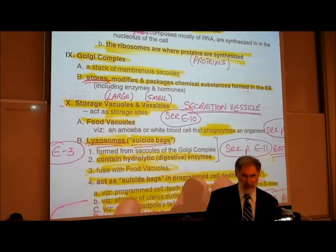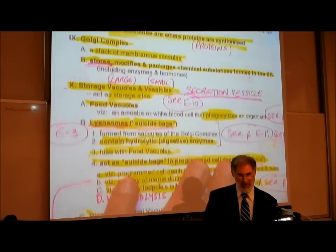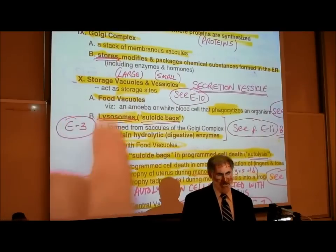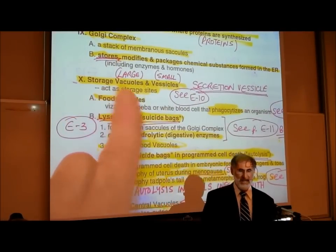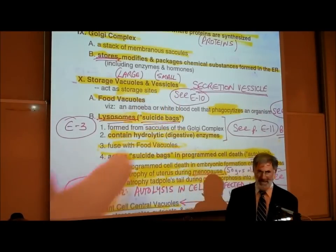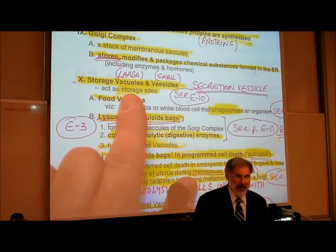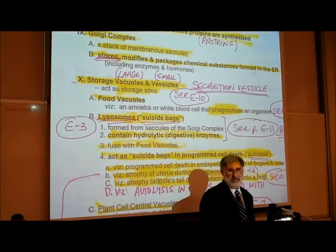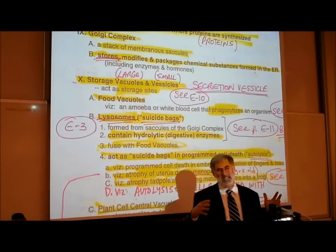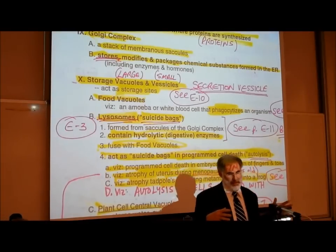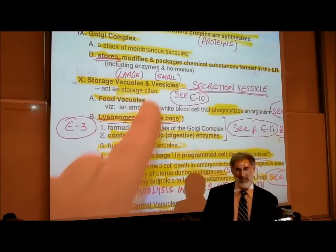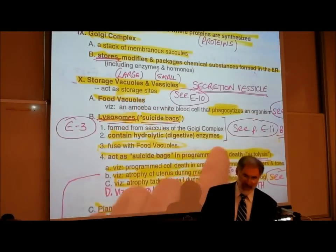Let me go just a drop further, and then we'll try to put this story together. What's listed next on Roman numeral 10 are storage vacuoles and vesicles. Vacuole and vesicle — these are sacks for storing or containing chemicals. If they are large in size, they're called a vacuole. If they're small, they're called a vesicle.